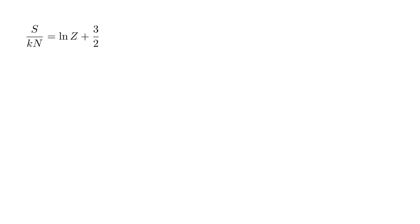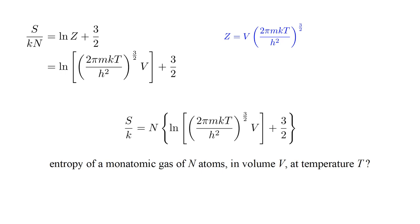Again, here is the dimensionless entropy per atom. Plugging in our expression for the partition function Z leads to the result that the dimensionless entropy of a gas with N atoms in volume V at temperature T is N times the quantity log three-halves power of two-pi M-K-T over H-squared times V plus three-halves.